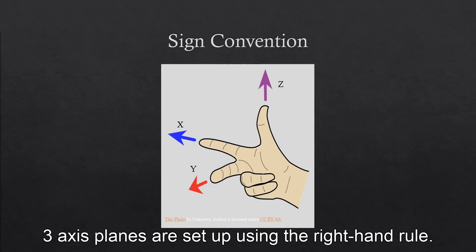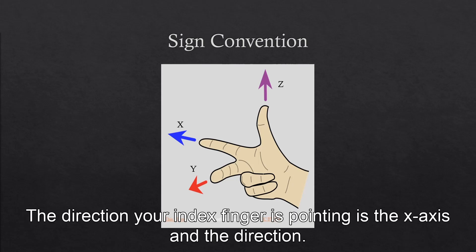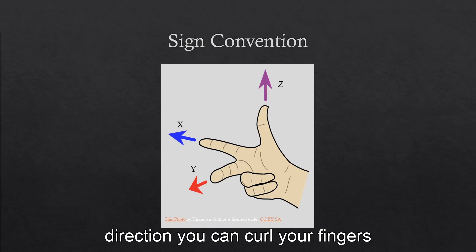Three axis planes are set up using the right-hand rule. Imagine holding out your hand with your thumb sticking up. The direction your index finger is pointing is the x-axis, and the direction your thumb is pointing is the z-axis. The y-axis is in the direction you can curl your fingers.